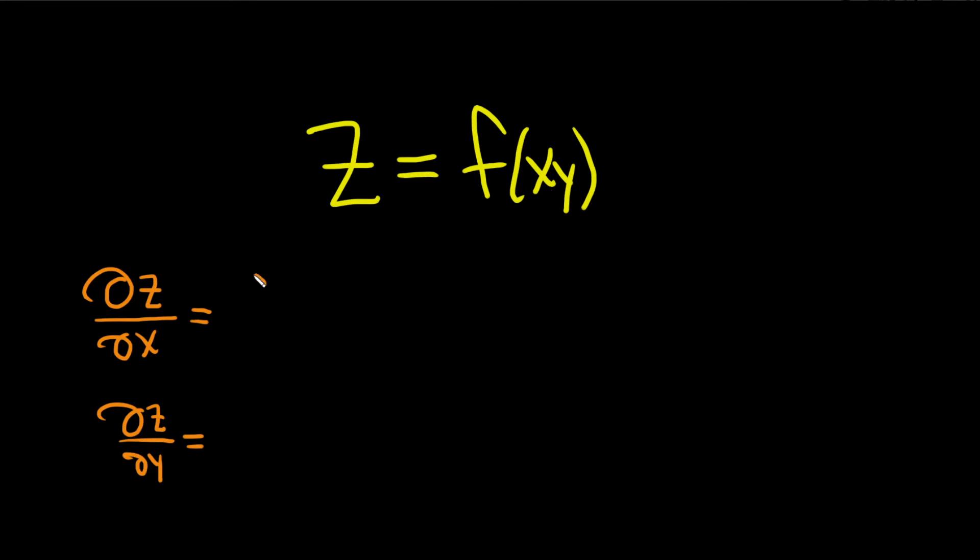So we're going to use the chain rule. It'll be the derivative of the outside, which is f, evaluated at the inside. So we leave the x times y alone and then times the derivative of the inside with respect to x.